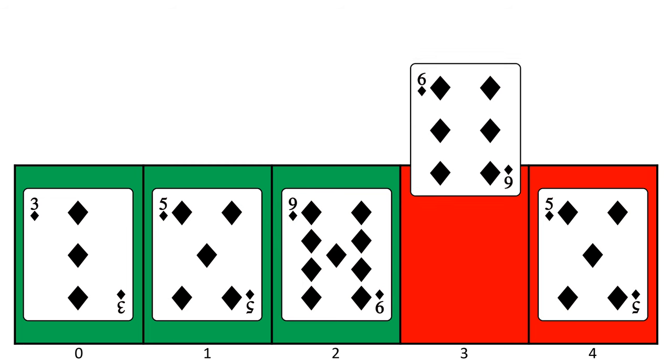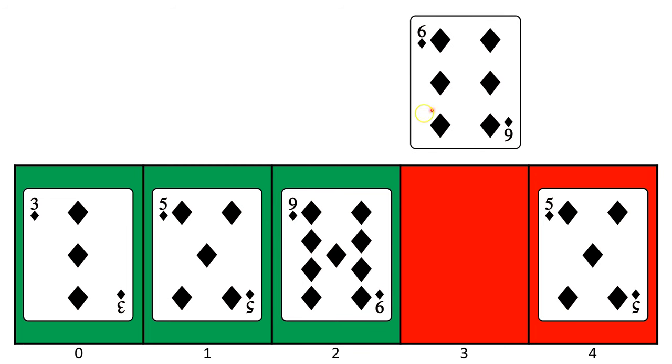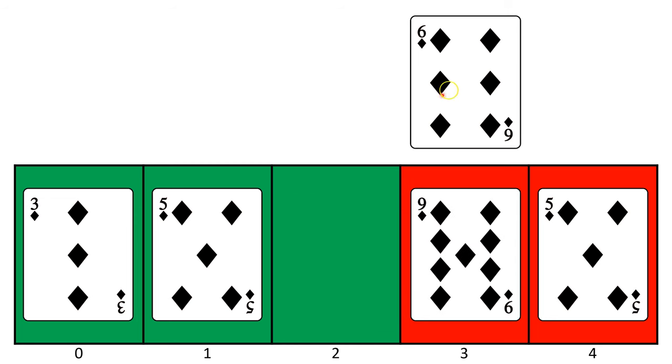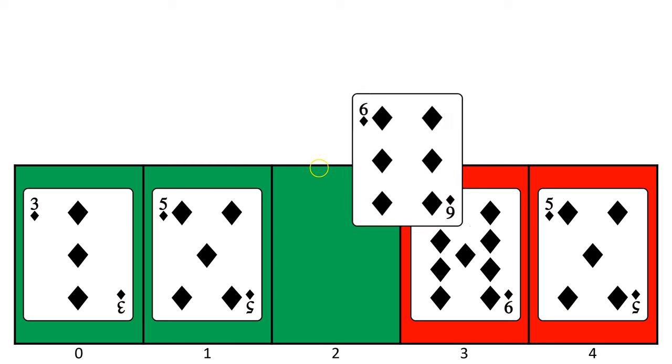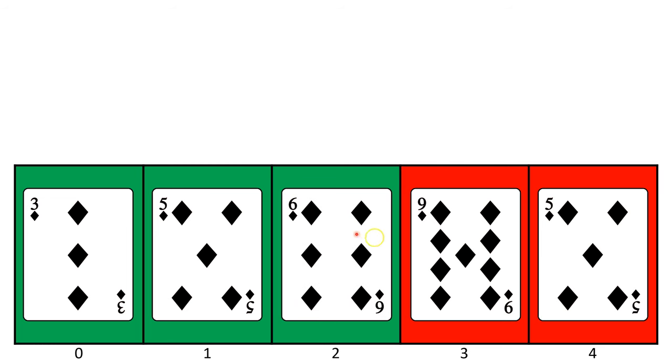Now we pull the 6 out of index 3. We compare it to the number to the left of it. See 6 is smaller, so we slide the 9 down. Then we compare 6 to the next number to the left of it. We see that 6 is not smaller, so we move 6 into the empty space. Now we've sorted the first 4 indexes of the array.